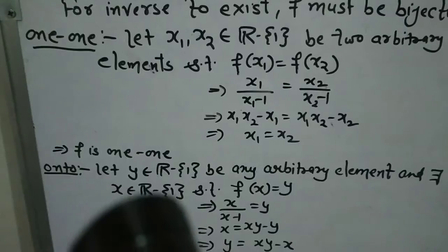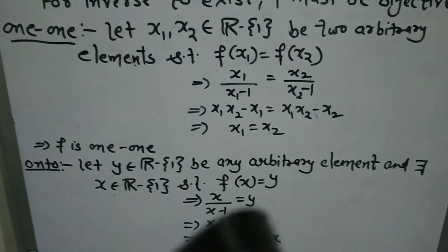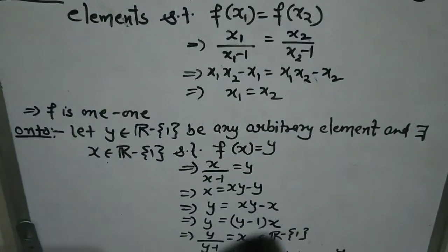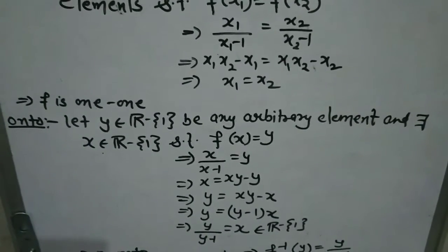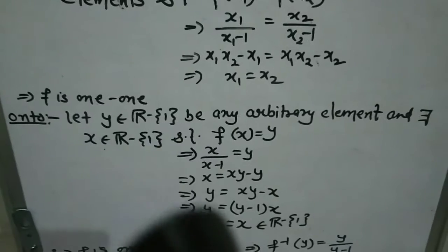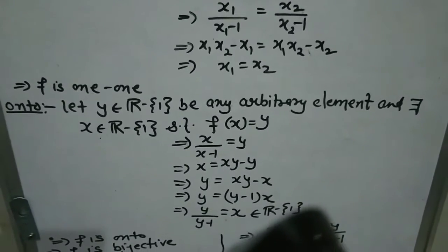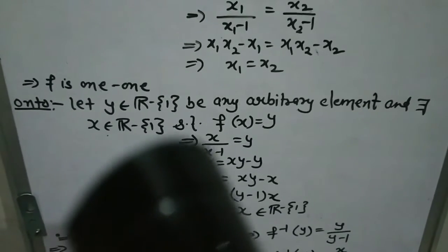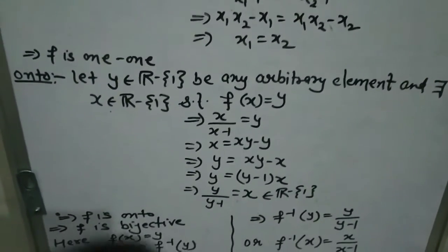Now for onto: pick any arbitrary element y from the co-domain. There exists x in the domain such that f(x) = y. So x/(x-1) = y. Cross multiplying and collecting x terms, we get x = y/(y-1). Now x is undefined when y = 1, but since y is taken from R-{1}, y cannot be 1. So x always belongs to the real numbers minus {1}. Therefore for every element in the co-domain, a pre-image exists in the domain — f is onto. So f is bijective.